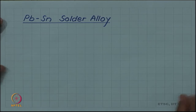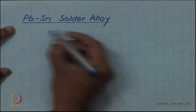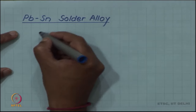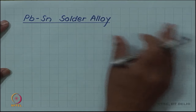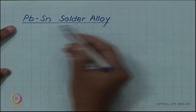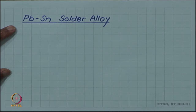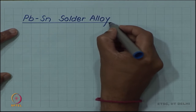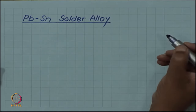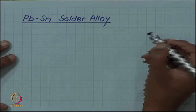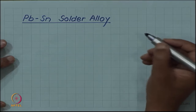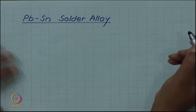As an example, we take up the lead-tin solder alloy. This is used for soldering and conventionally was the most common solder alloy. Now, because of concerns about the toxicity of lead, it is being phased out in many contexts, but it still constitutes a nice system to study for phase diagrams.